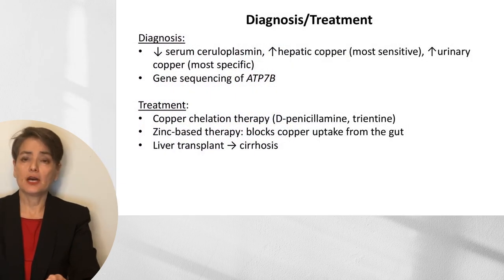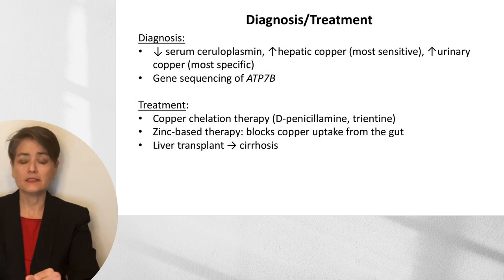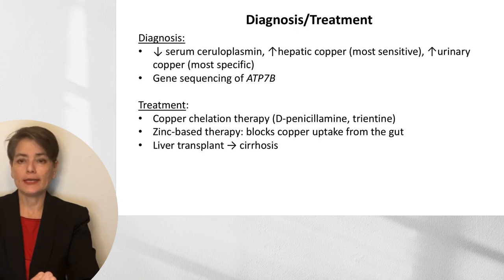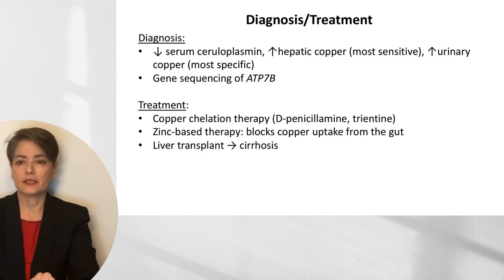A special stain confirms copper deposition in the liver. Diagnosis is based on decreased serum ceruloplasmin, increased hepatic copper (most sensitive test), or increased urinary copper (most specific), followed by gene sequencing. Treatment includes copper chelation with D-penicillamine or trientine, zinc-based therapy to block gut copper uptake, and liver transplant for patients who develop cirrhosis.